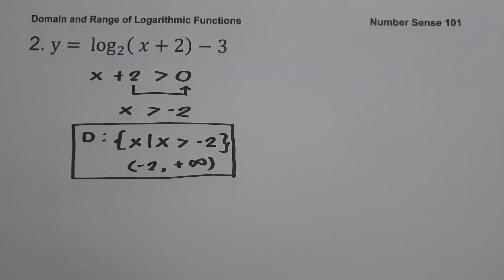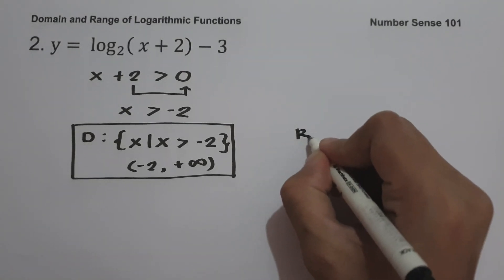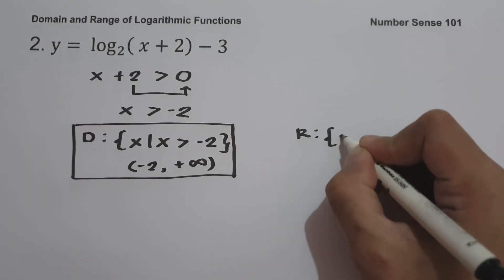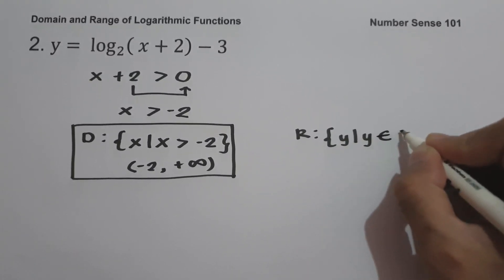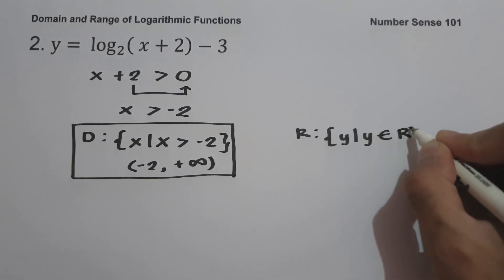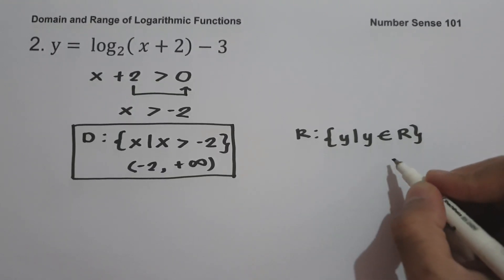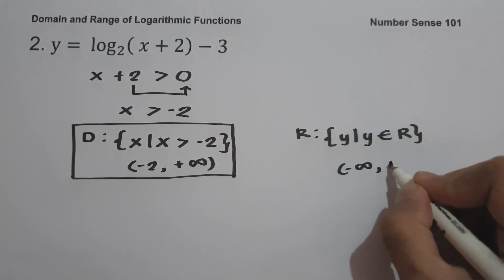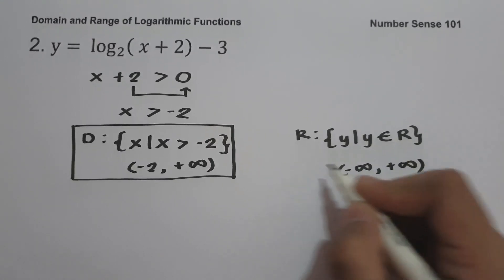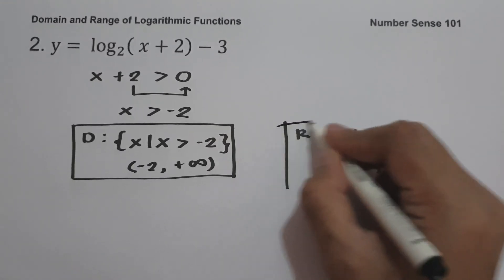To find the range of the given function, always remember the range of a logarithmic function is the set of all real numbers. So the range is the set of y values such that y is the set of all real numbers, or in interval notation, from negative infinity up to positive infinity. This will be our range.